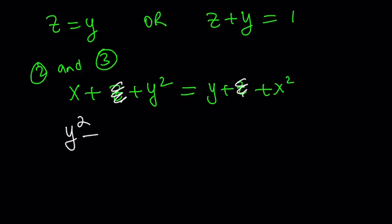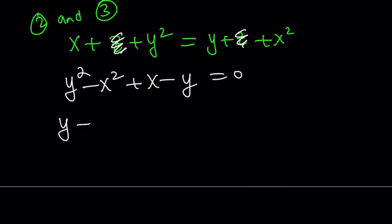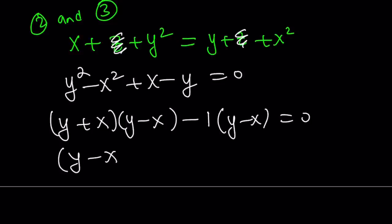Let's put x squared here and bring over the y as well. And now, we can factor this as y plus x, y minus x, minus negative one times y minus x equals zero. And similarly, we can take out y minus x and get y plus x minus one equals zero from here.